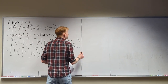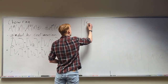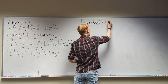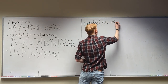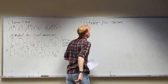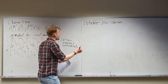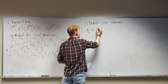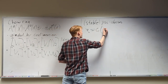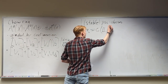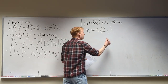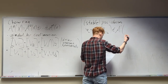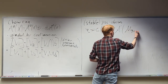Let's start with psi classes, and we'll start with stable psi classes to get our feet wet first. A psi class is an example of a Chern class — it's the first Chern class of the cotangent line bundle. This is in the codimension-one part of the Chow ring.